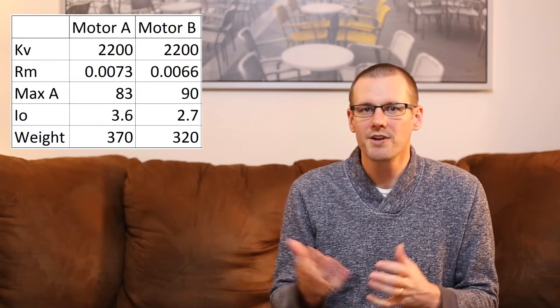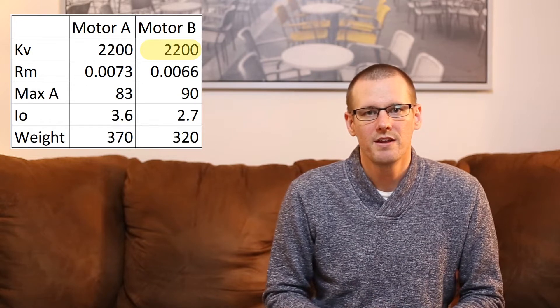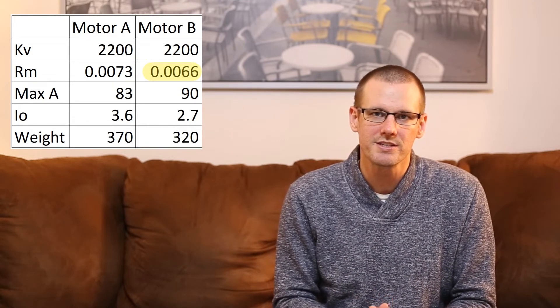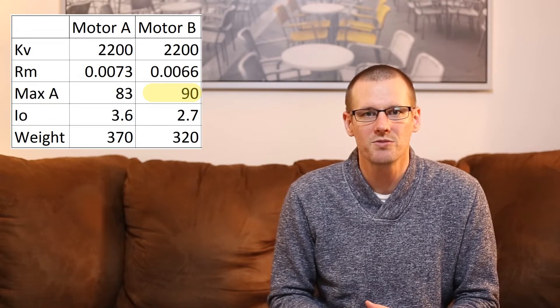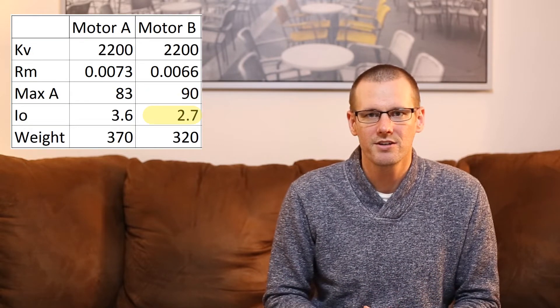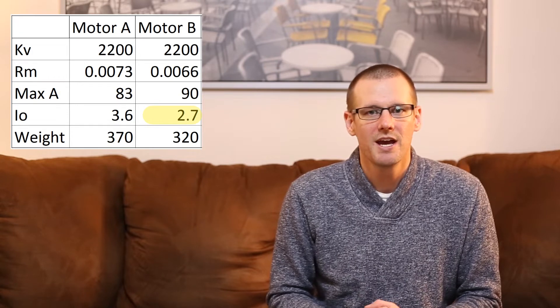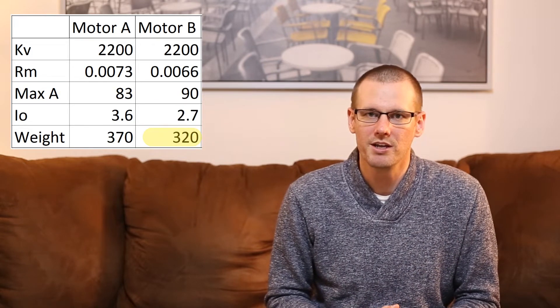Let's look at brushless motor B. This also has the 2200 kV. It has an internal resistance of 0.0066 ohms. We're looking at a maximum current here of 90 amps with the idle current of 2.7 amps. Then our weight is at 320 grams.